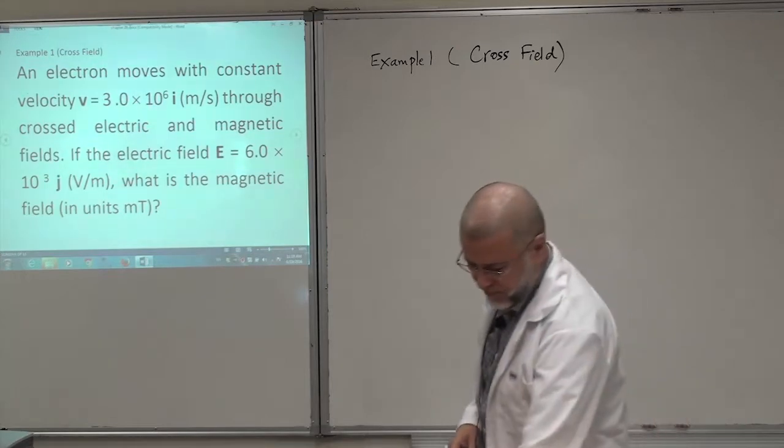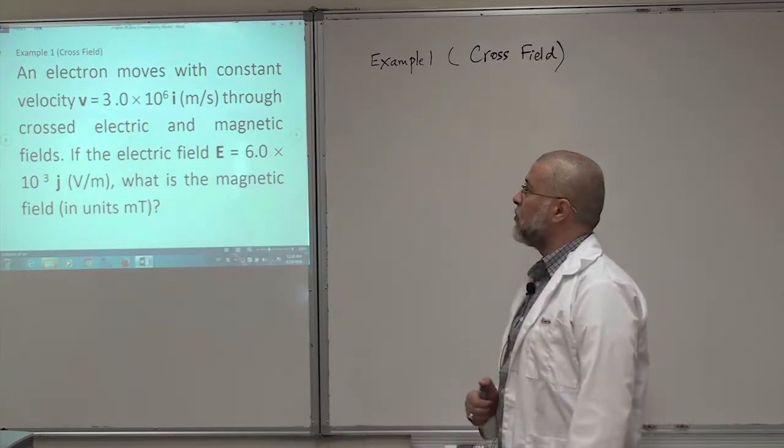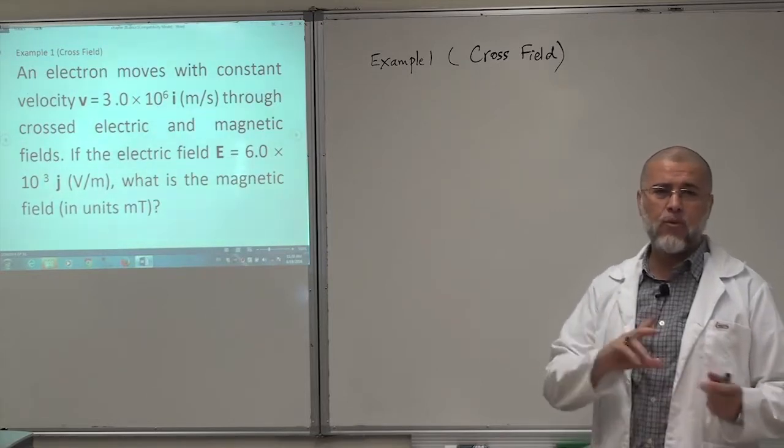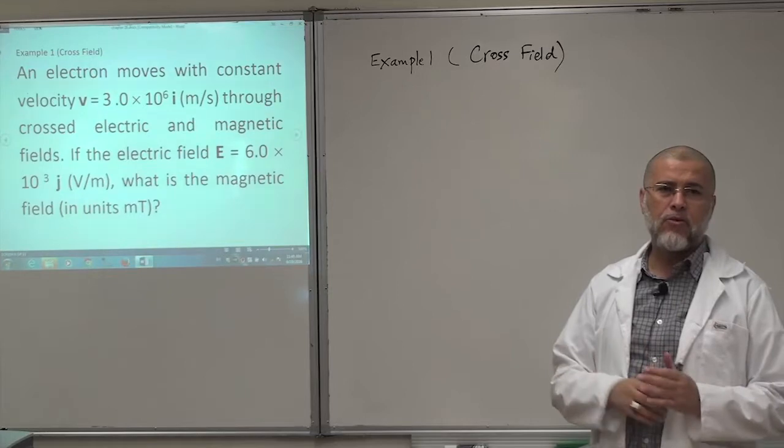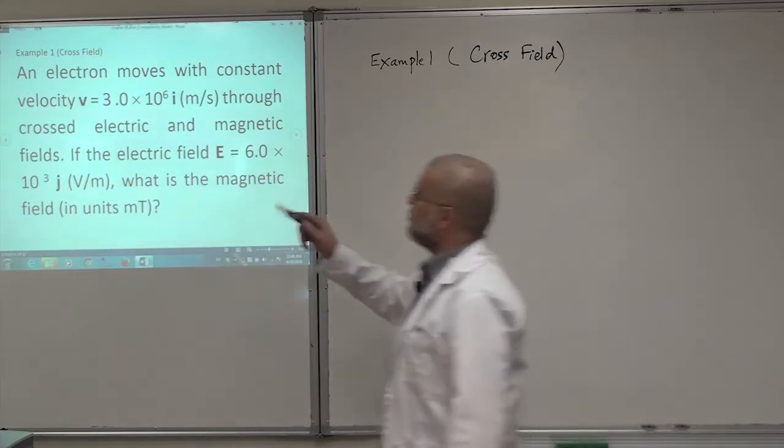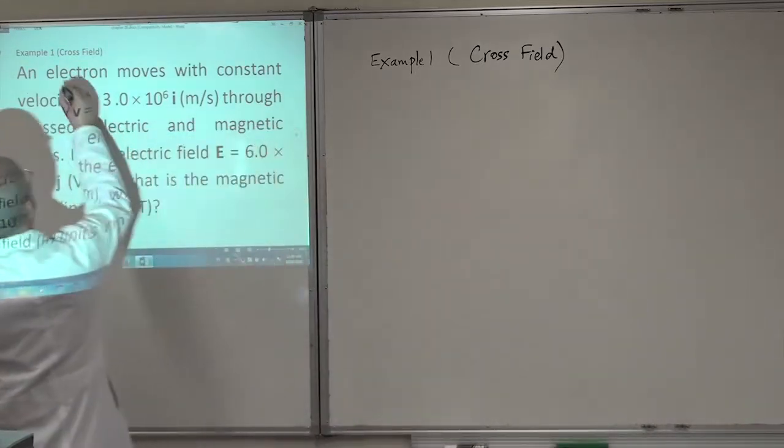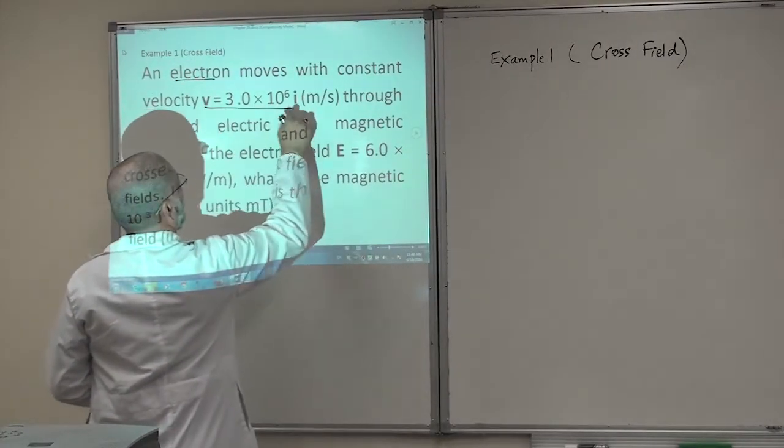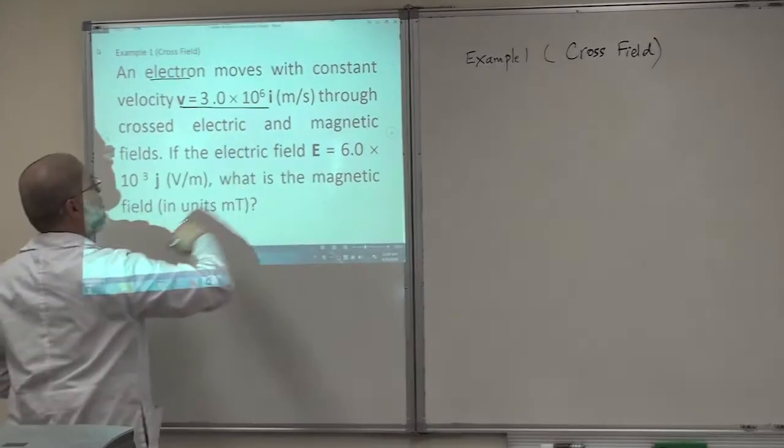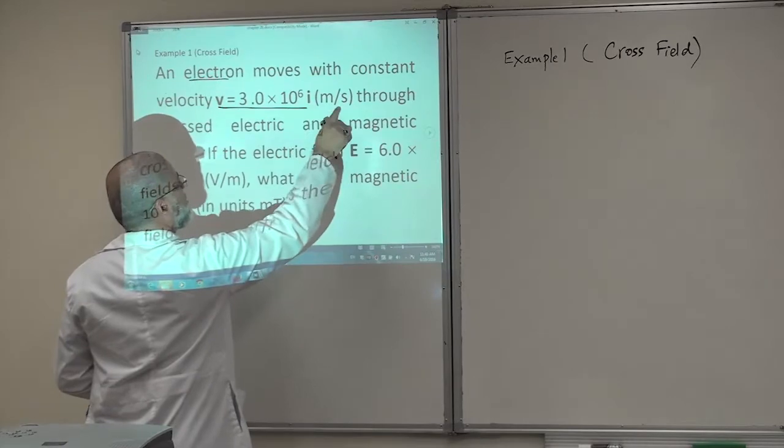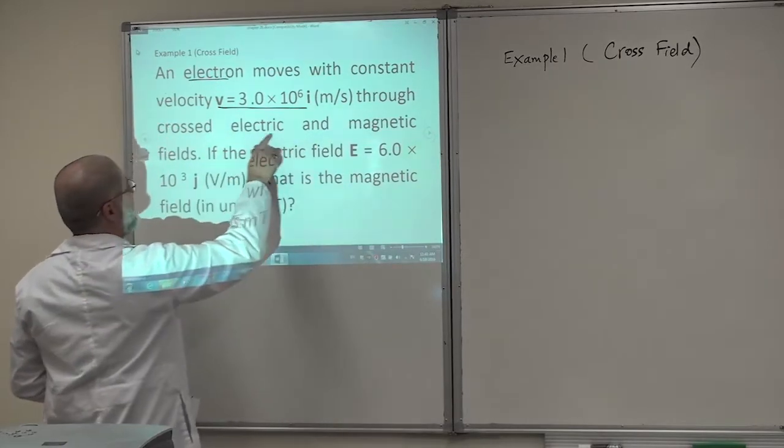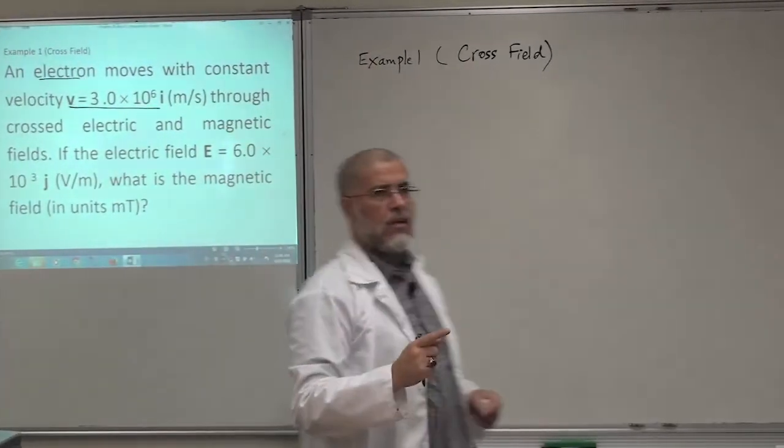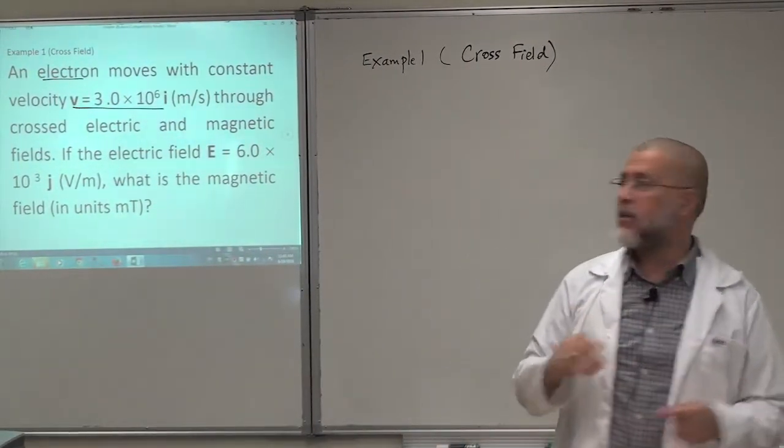Let's look at this example here. It says an electron - it's important to know if it is a positive or negative charge because the direction of the Lorentz force changes depending on the sign of the charge. An electron moves with a constant velocity through crossed electric and magnetic fields. So we have an electric and magnetic field which crosses, which means the angle between B and E is 90 degrees.